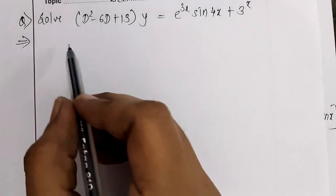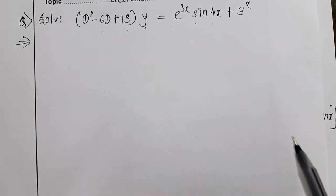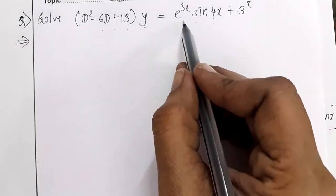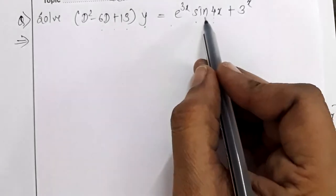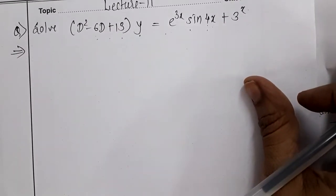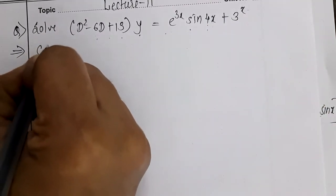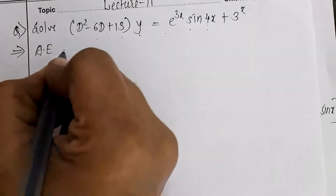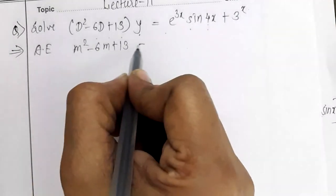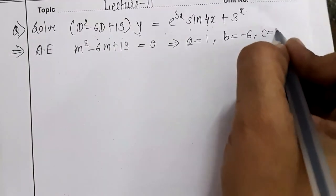The next example: solve (D² - 6D + 13)y = e^(3x)sin(4x) + 3^x. On the right-hand side we have two terms: e^(3x)sin(4x) requires case 5 (e^(ax)·f(x)), and 3^x we convert using 3^x = e^(x·log3). First, find CF via the auxiliary equation m² - 6m + 13 = 0, where a = 1, b = -6, c = 13.